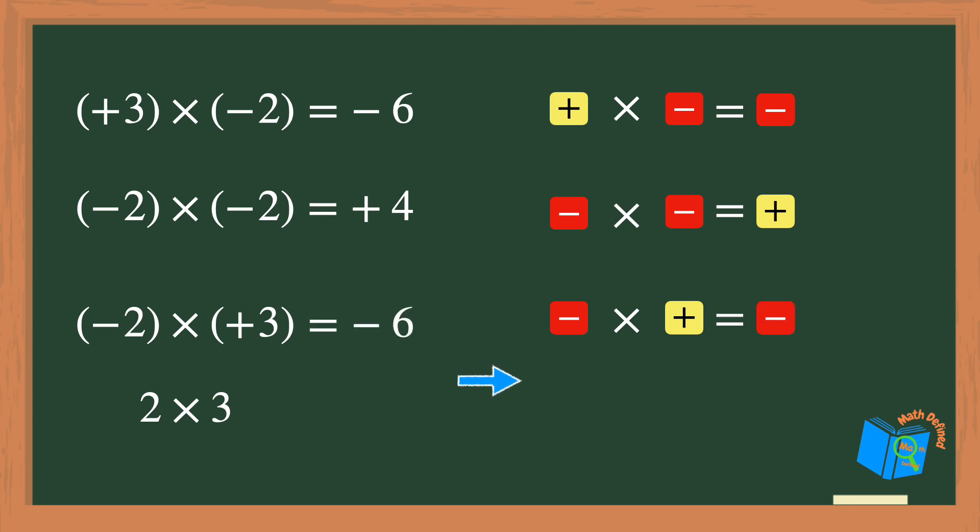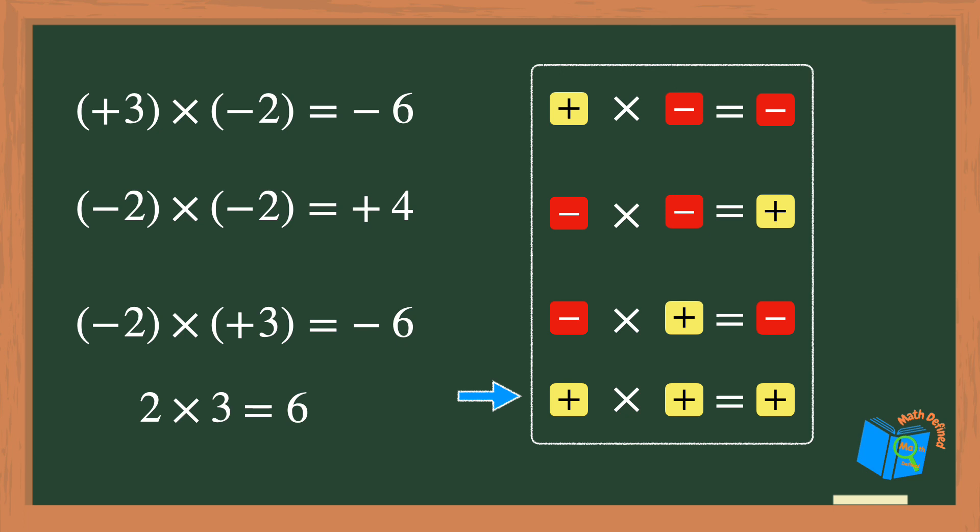And of course you already know that if you multiply two positive numbers your answer will be positive. These four patterns show the rules for multiplying positive and negative numbers.